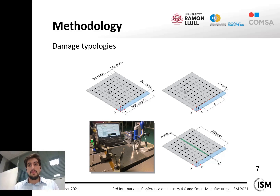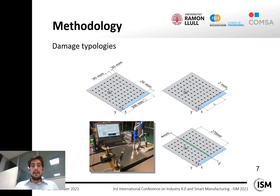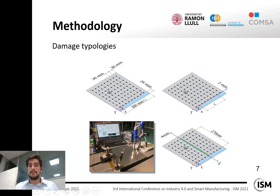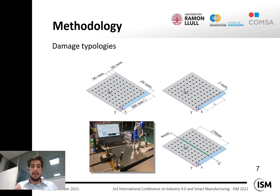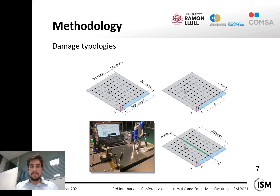First of all we need a dataset. To obtain it we use this 300 by 300 aluminium plate with three scenarios: the pristine plate, the plate with a crack simulacrum, and the plate with a stringer reinforcement. The data was obtained using the roving hammer method, which basically uses a hammer with a sensor to hit the structure at each of the 81 points, obtaining 81 frequency response functions that combined give us the structure's overall frequency response function.